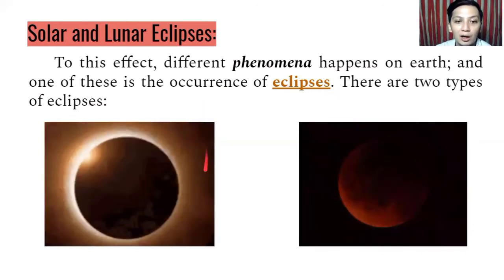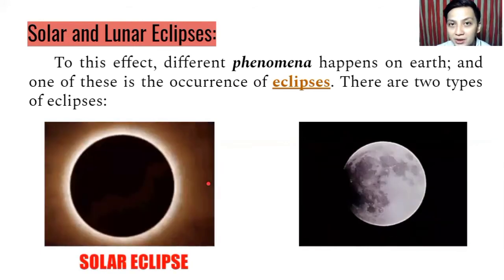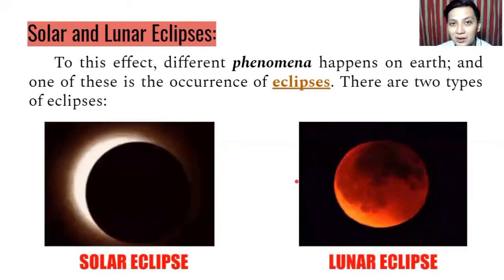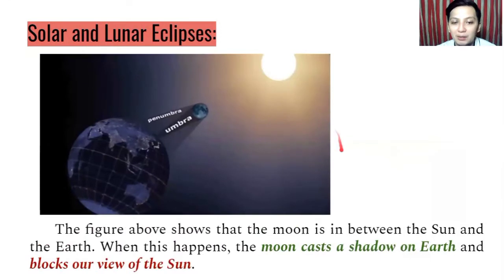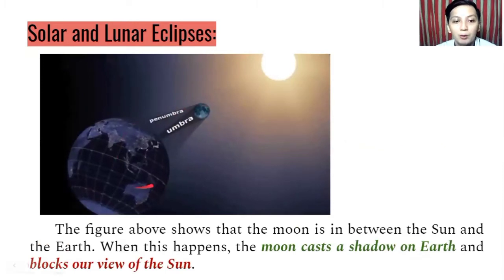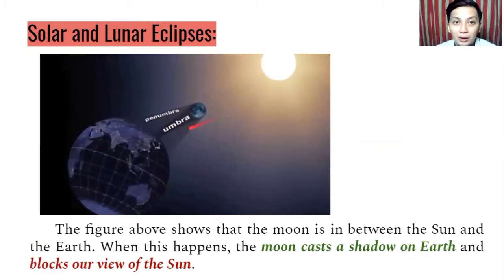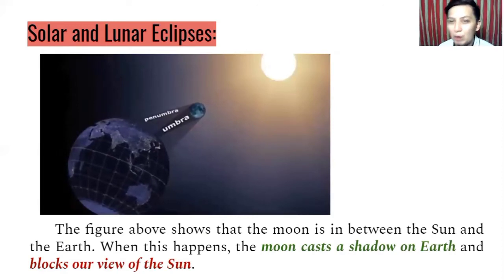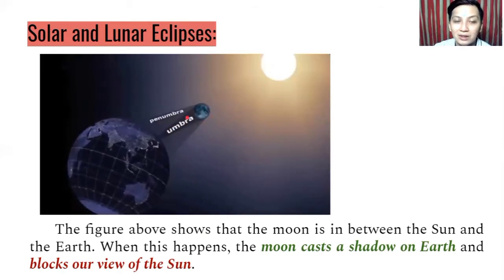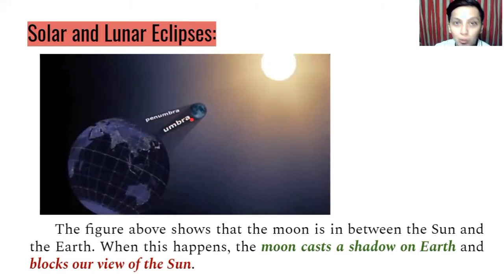As you can see in the figure, we have the sun, the moon, and the Earth. This is the position when eclipses take place, but it differs depending on which celestial body blocks the light. There are two types of shadows: the darker shadow is the umbra, while the lighter shadow is the penumbra. The figure above shows that the moon is in between the sun and Earth — when this happens, the moon casts a shadow on Earth and blocks our view of the sun.